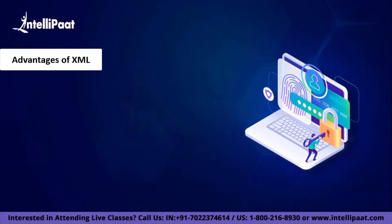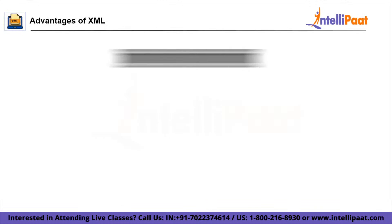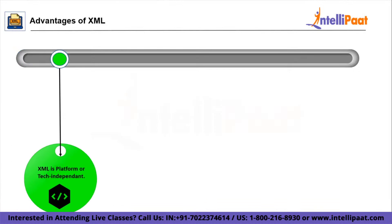Let's look at a few advantages of XML. The first one is that XML is platform independent. Upgrading to a new system, hardware, or software is always time-consuming, and large amounts of data must be converted — in the process, incompatible data is often lost. But when it comes to XML, data is stored in text format, which makes it easier to expand or upgrade to new operating systems, new applications, or new browsers without losing any sort of data.